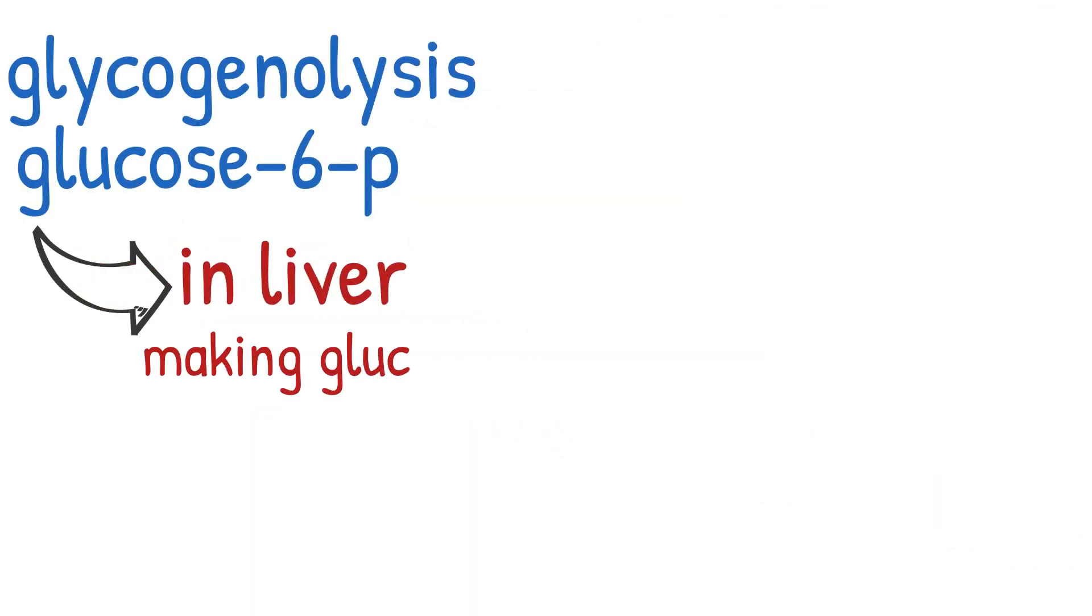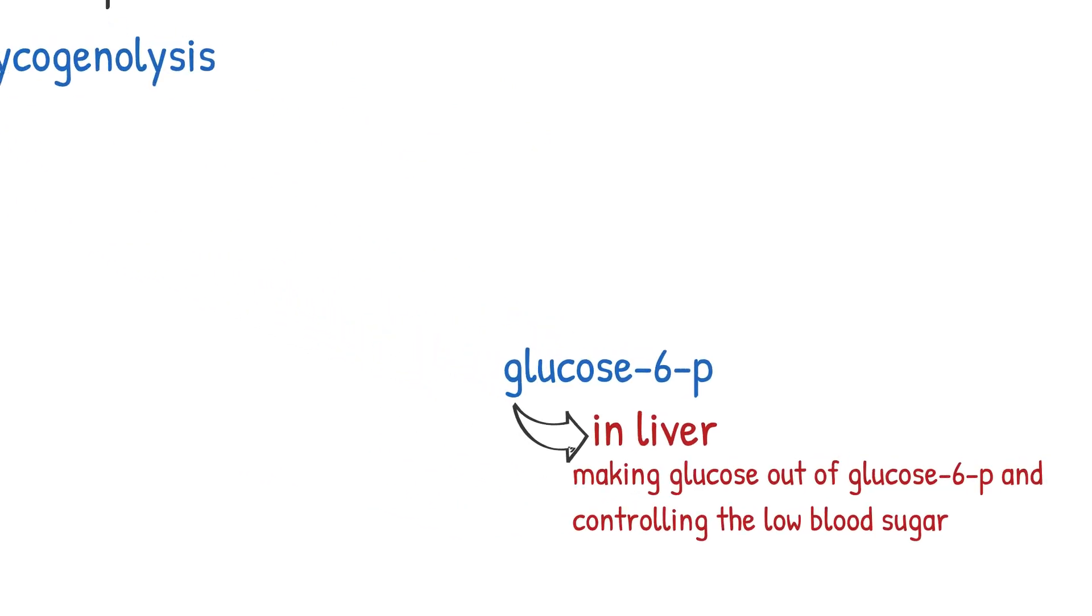In liver after glycogenolysis, glucose 6-phosphate can be converted into glucose, which liver uses to control the low blood sugar.